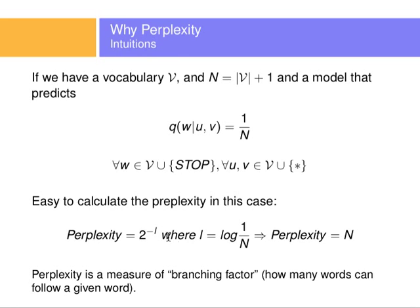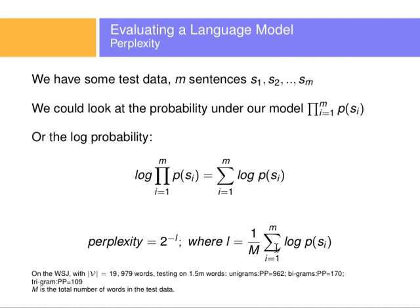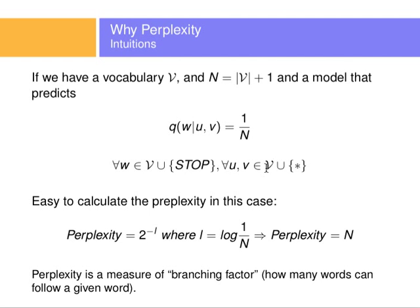What happens here is that it's easy to compute the perplexity in this case, because 2 to the negative l, where l is going to be log of 1 over n. Remember, this probability in my example is 1 over n, and I will have that m times divided by this m, they cancel out. So then, this is going to be just log of 1 over n.